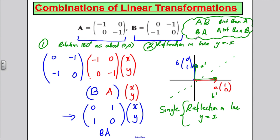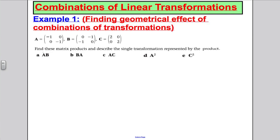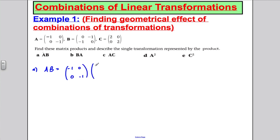I'm given matrices A, B, and C, and I want to find the products and describe the single transformation each represents. Let's do AB first. That's (−1, 0; 0, −1) multiplied by (0, −1; −1, 0). Multiplying those out gives (0, 1; 1, 0).